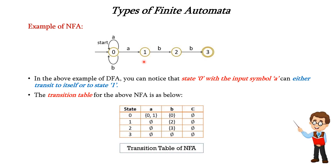In the NFA example, for state 0 with input A, it either goes to 0 or 1. For input B, it goes to itself (state 0). For epsilon, there are no moves, so it is null. For state 1 with input A, it goes nowhere (null); for input B, it goes to state 2; for epsilon, no moves. Similarly, we write entries for states 2 and 3. Thus we have discussed the concept of finite automata, its representation, and its types. Thank you.